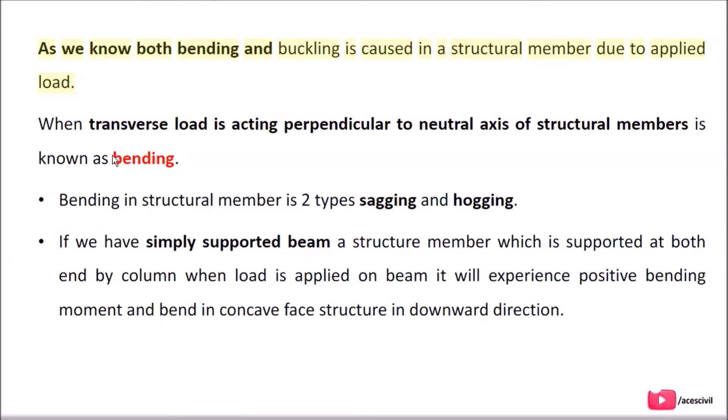Both bending and buckling are caused in a structural member due to applied load. When a transverse load is acting perpendicular to the neutral axis of structural members, it is known as bending. Bending in a structural member is of two types: sagging and hogging.